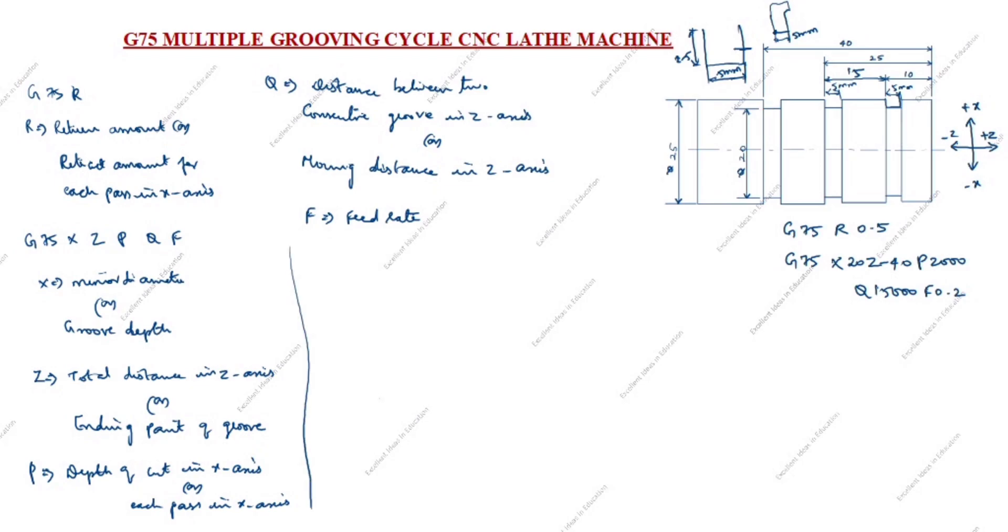Now we will write the program. O0001 program name. N01 block number. G28 U0 W0, this is home position. U0 means X0, W0 means Z0.